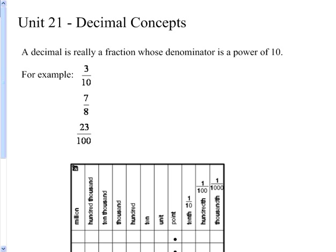So 3 tenths is a decimal fraction, and the reason that's a decimal fraction is we can rewrite it as a decimal as 0.3, which is really understood to mean the same thing. 7 eighths is not a decimal fraction. Now we can rewrite it as a decimal, but it's not a decimal fraction because its denominator is not a power of 10.